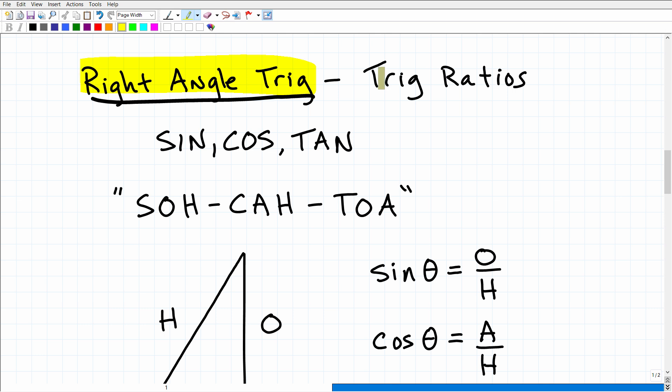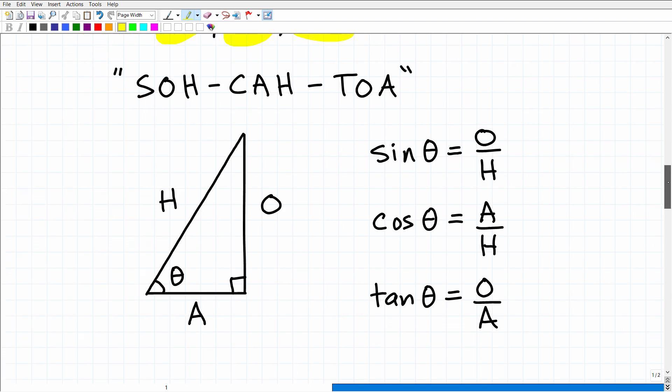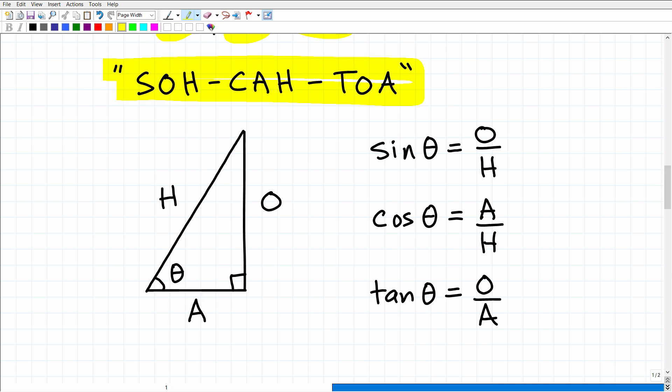All right, so right angle trigonometry, really what we're talking about more specifically is trigonometric ratios, sine, cosine, and tangent. That's what we're going to need to know in order to solve this problem. So what we have here is this great phrase, and hopefully you're familiar with it. I'm pretty sure you are, or something like it. It's SOHCAHTOA. SOHCAHTOA. It's just a little mnemonic memory aid so we can remember the appropriate trigonometric ratios. So what we need first is a right triangle, because we are talking about right triangle trigonometry. And the longest side of a right triangle, of course, is the hypotenuse. So we'll label that H.